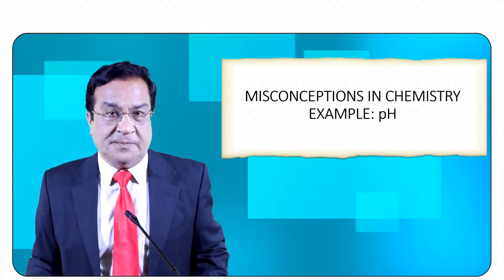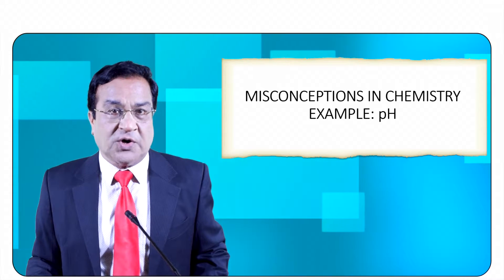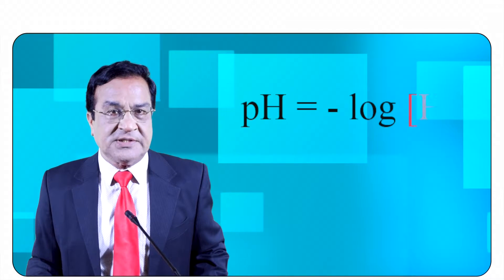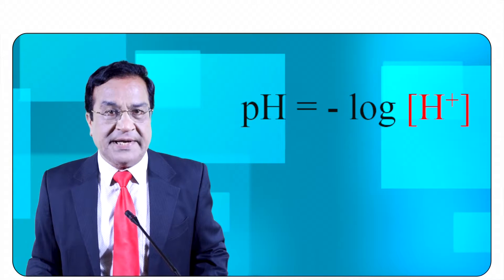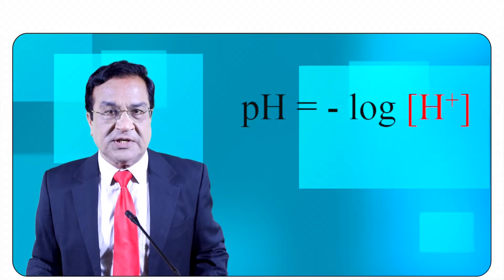Let's take an example. We all talk of pH and how we define pH. We say that pH is equal to minus log concentration of hydrogen ions. This is normally the answer which we provide.